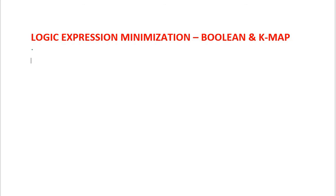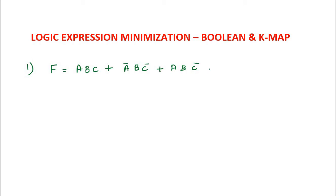Hi all, in this video I am going to explain minimization of logical expressions using Boolean minimization and K-map minimization. Problem number 1: F is equal to ABC plus A'BC' plus AB'C' plus A'BC.